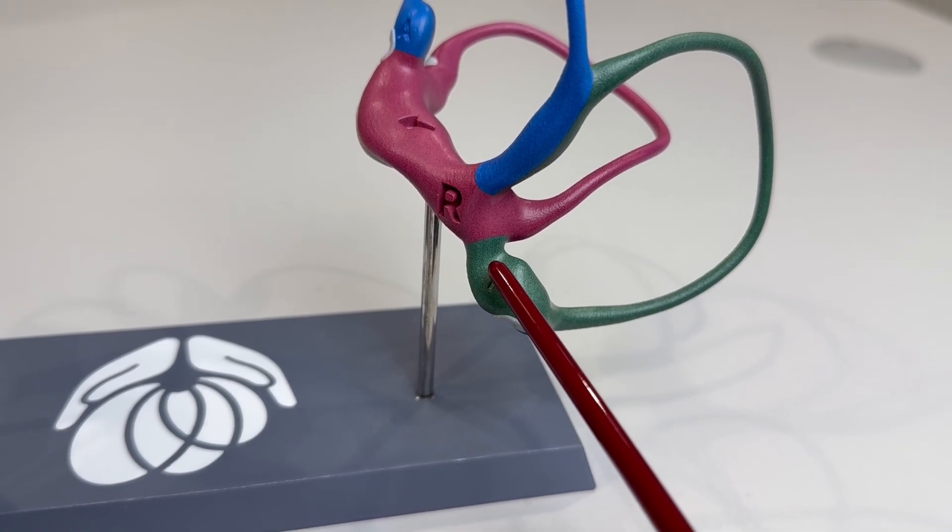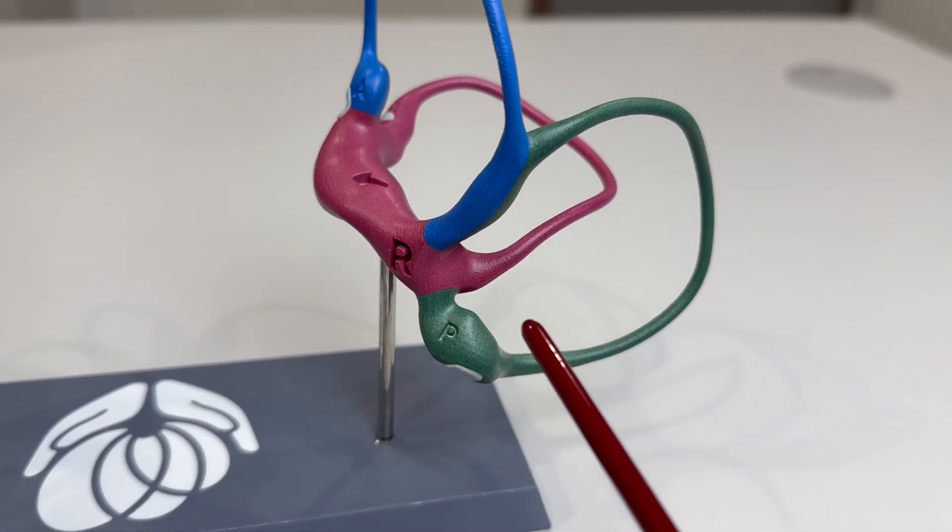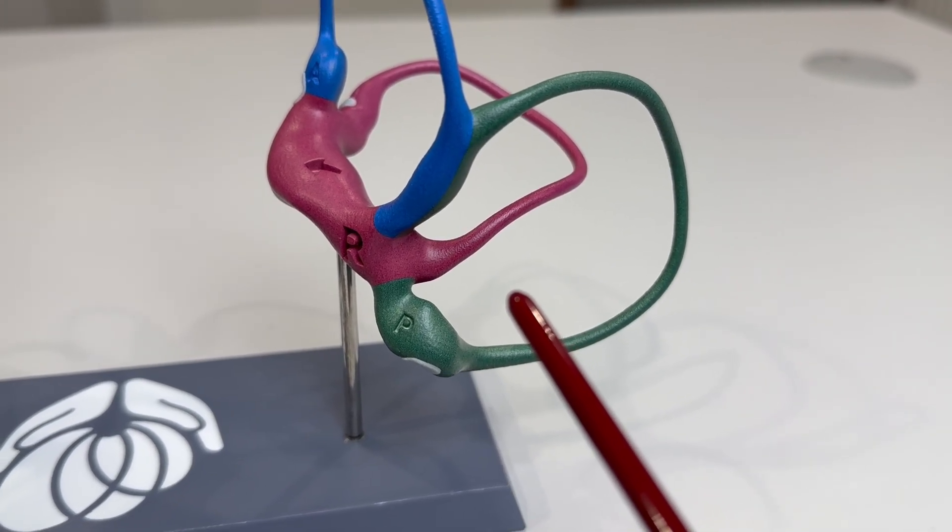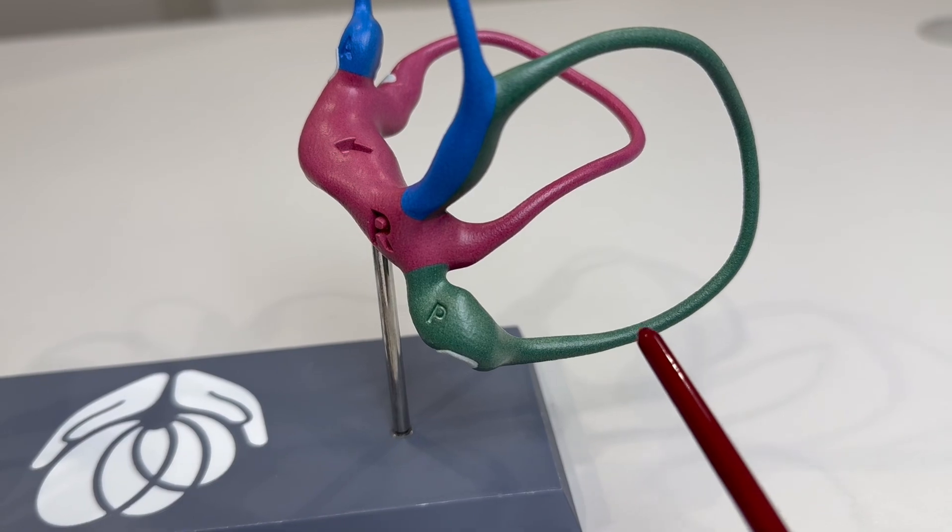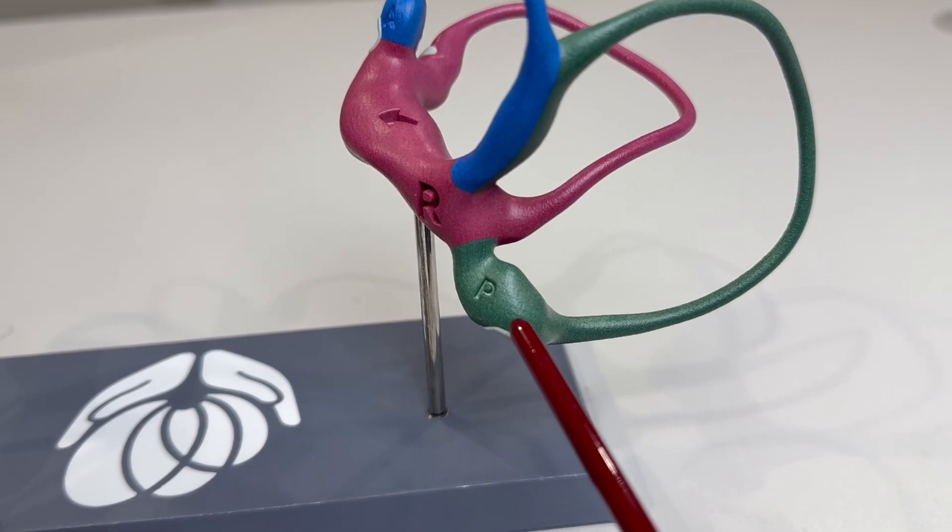Like you can see here in the posterior canal, each of the three semicircular canals starts with the non-ampullary end and ends with the ampullary end.